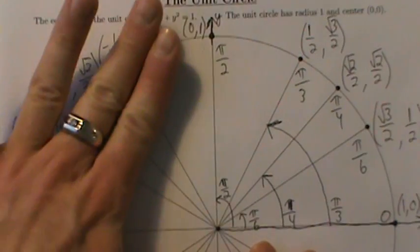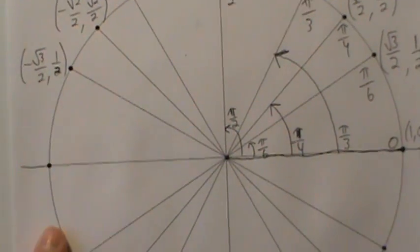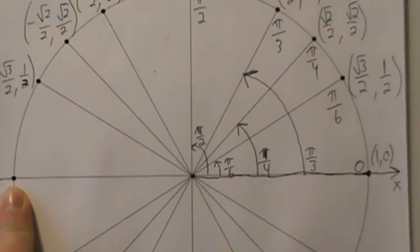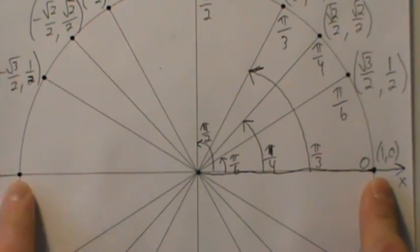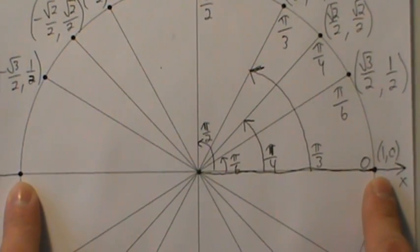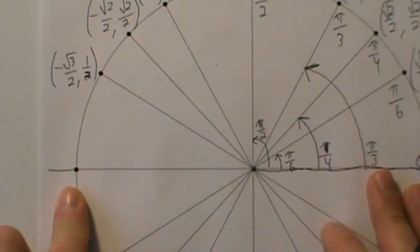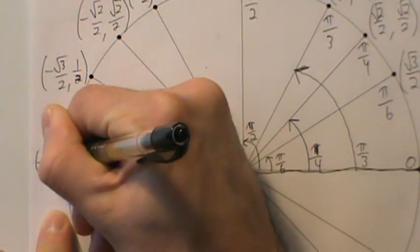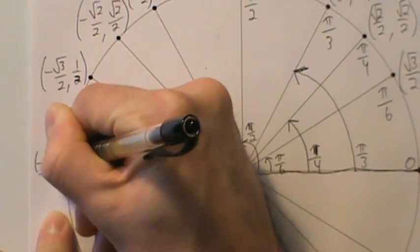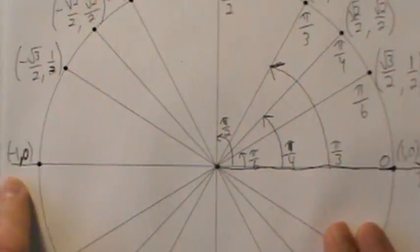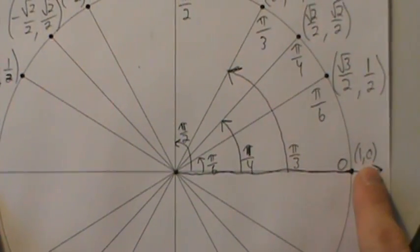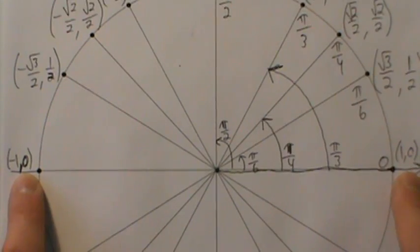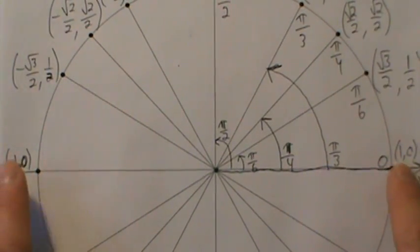What about the leftmost point? It's a reflection of (1, 0) over the y-axis, so it becomes (negative 1, 0). Or you can just think: it's the farthest left point on the unit circle, which has radius 1, so it has to be (negative 1, 0).